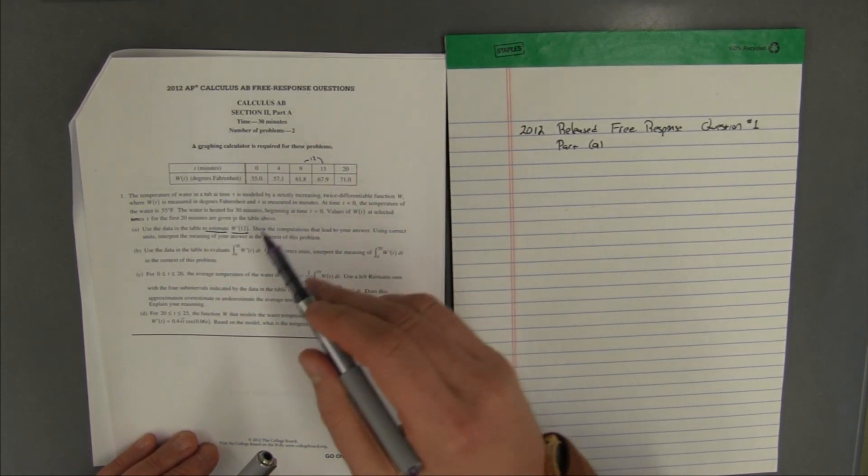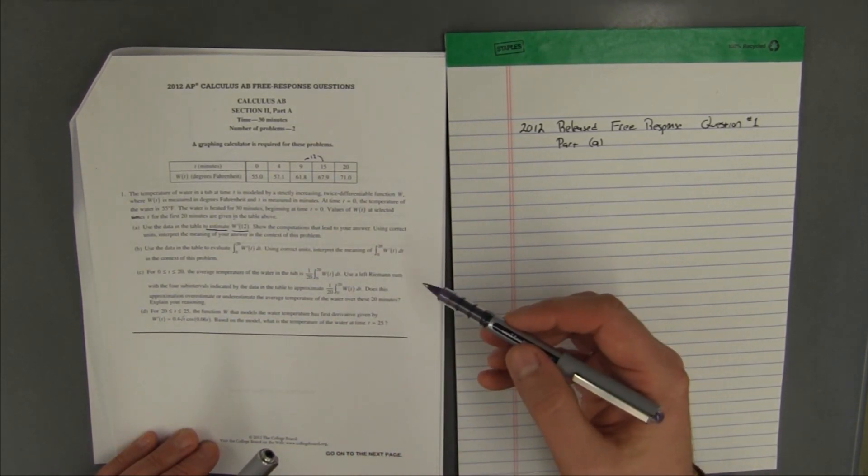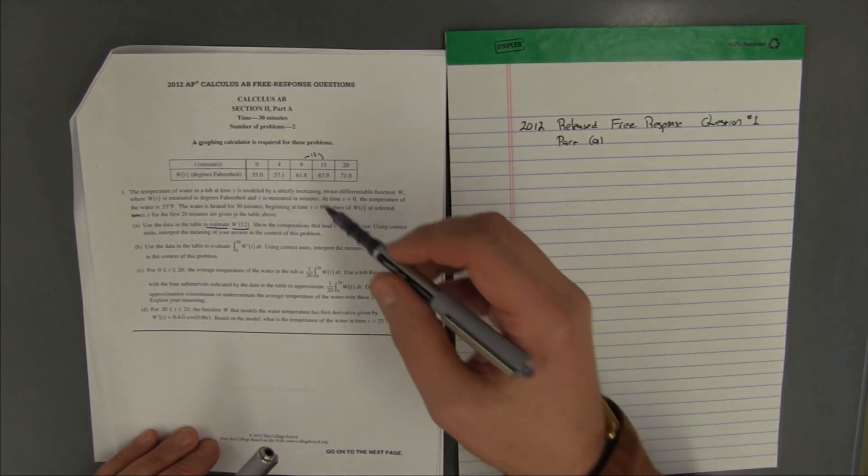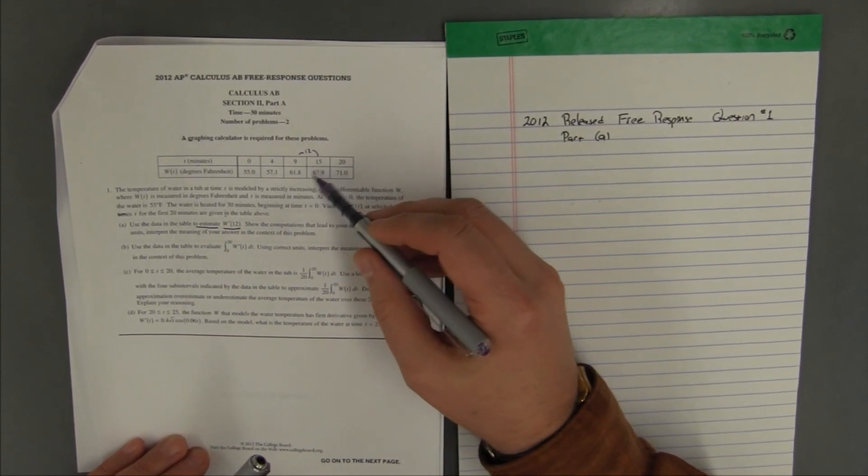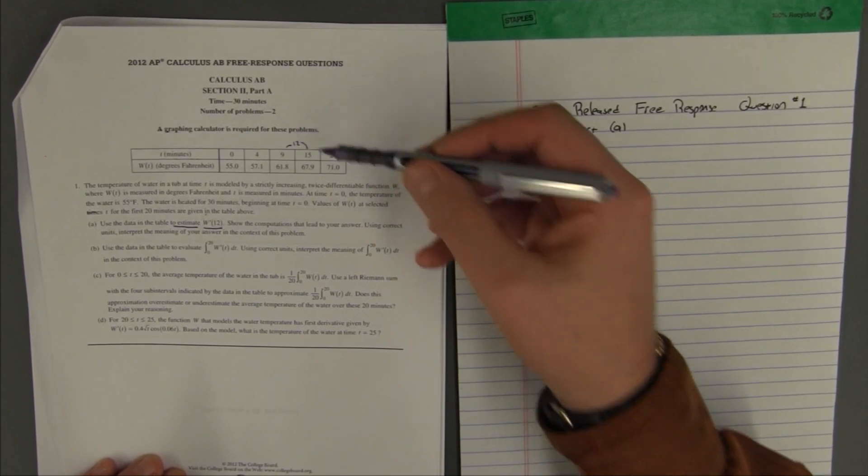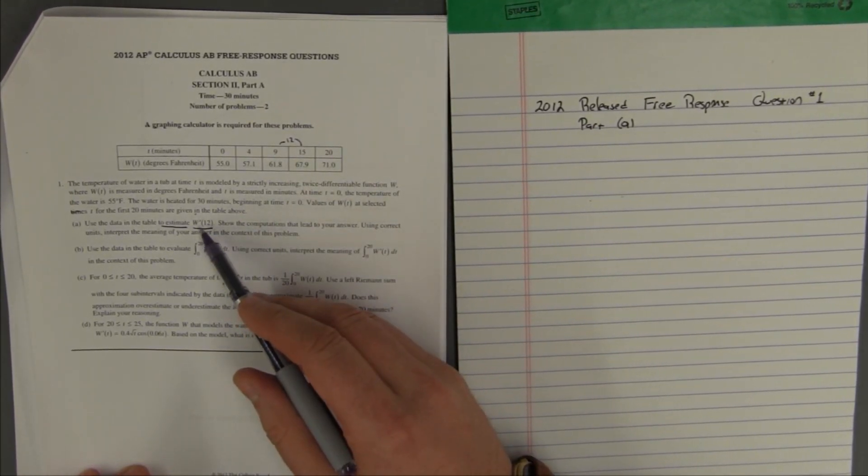But these are the w values and they've asked us for w prime. If they asked us to estimate w, which is the temperature of the water, then I would just say an average of these two would give me the approximate temperature at the average of these two times. But they're not asking for the temperature. They're asking for w prime.